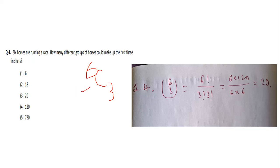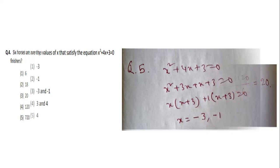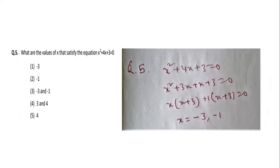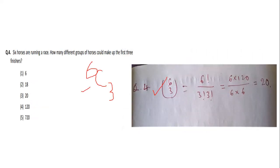6C3 can be computed as 6! / (3! × 3!) = 720 / (6 × 6) = 20. So 6C3 = 20. Option number 3 is the right answer.